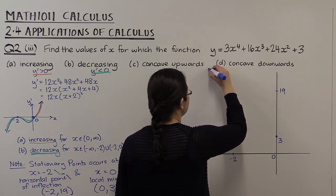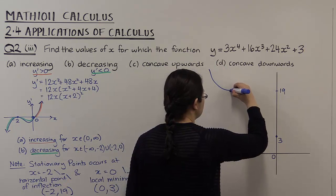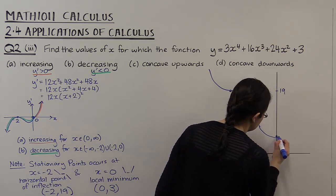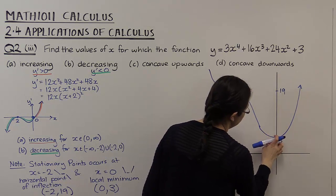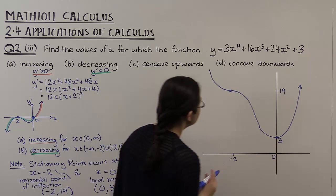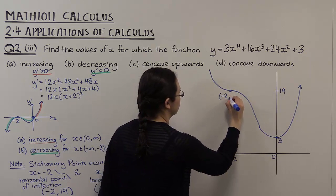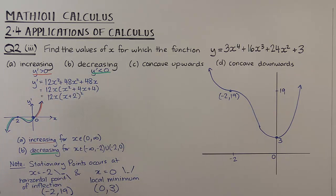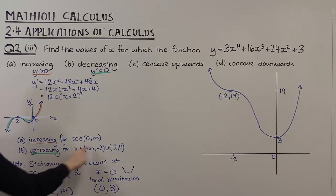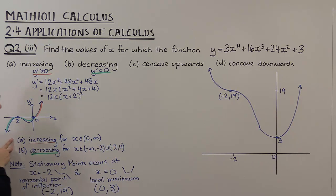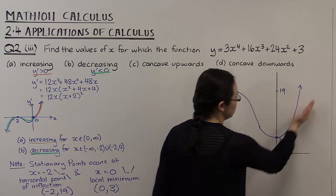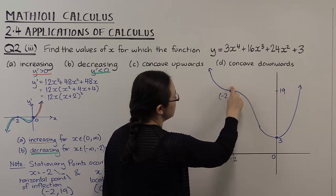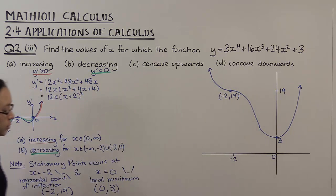So at minus 2, the function has a negative gradient, is flat, then continues with a negative gradient — that's the horizontal point of inflection. Then it comes down to a local minimum at (0, 3). This is what y' is telling us and it makes sense: increasing from 0 to infinity and decreasing for x less than 0, except at the horizontal point of inflection.